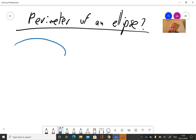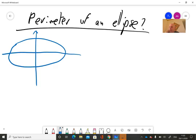Let's consider the ellipse. This is b, this is a. The equation of an ellipse is x squared over a squared plus y squared over b squared equals one.